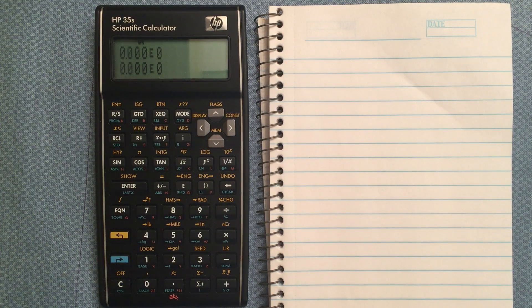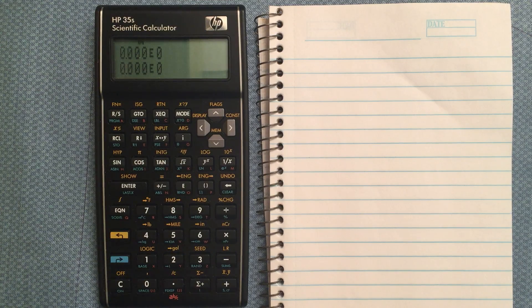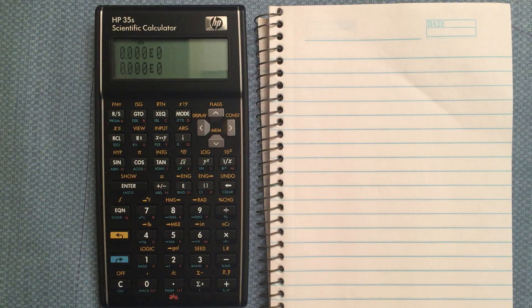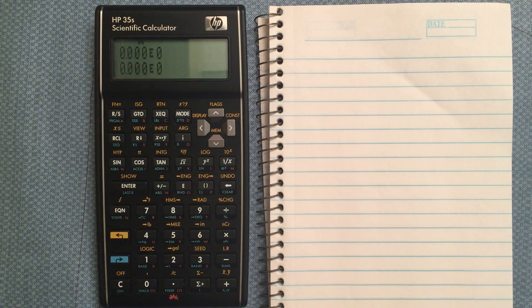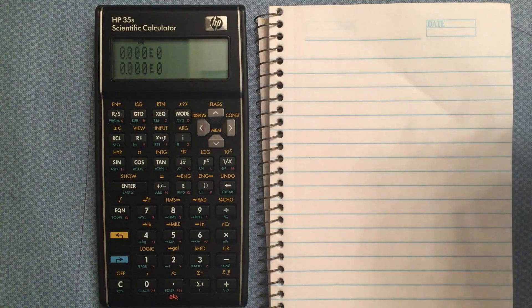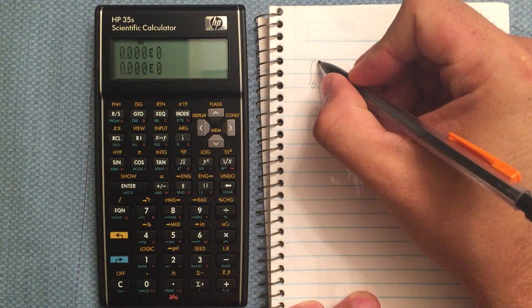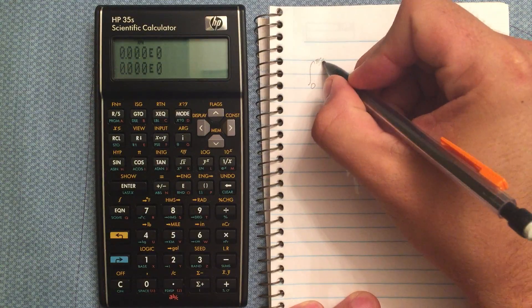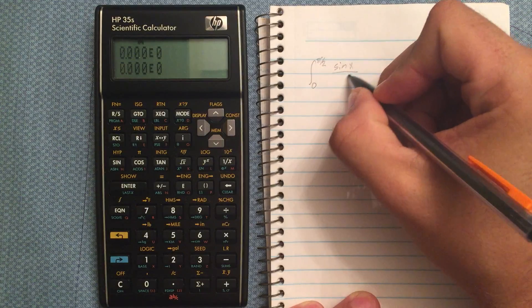I wanted to do a quick video just highlighting how one would do an integral on the HP 35s. First, you would enter into your x and y part of the stack the limits of what you would want to do. For example, if we wanted to do from 0 to pi over 2 of sine x over x.